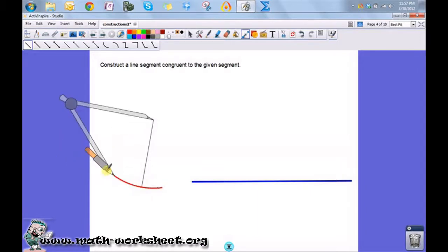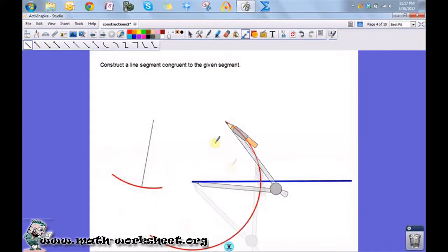Then draw an arc just to make sure it goes through. Now you take your compass and put its point at the end point of the segment you drew earlier and draw an arc.